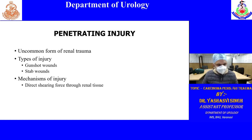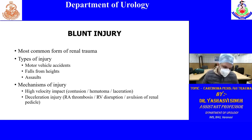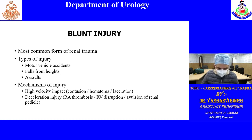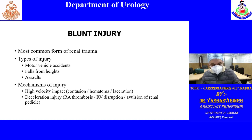Moving to renal trauma: it can occur as penetrating injury — most commonly gunshot or stab wound — or blunt injury from motor vehicle accident, fall from height, or assault. Up to 90% of renal injury is due to blunt trauma, and among blunt trauma, deceleration injury is particularly important and asked in exams.